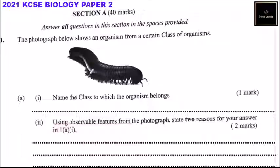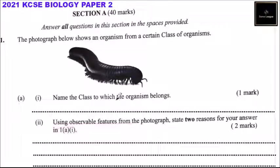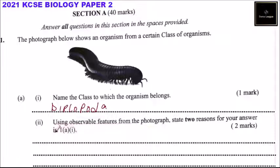We have a photo here of a myriapod. Myriapods are a group of arthropods characterized by having two pairs of jointed legs on most body segments. Roman numeral one asks you to name the class to which the organism belongs. This myriapod belongs to the class known as Diplopoda.